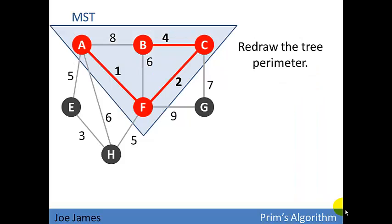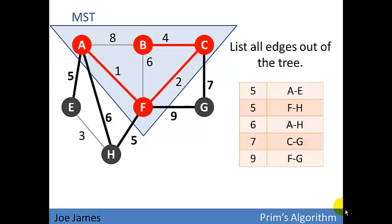So we pick edge four. We redraw our tree perimeter. We can see at this point now that we're not going to need edges AB at a weight of eight or BF at a weight of six. We're just not going to use those in a minimum spanning tree. Those are going to be left out. So now let's list out all the edges going out from our tree. We have those in black. Edge five is the cheapest.